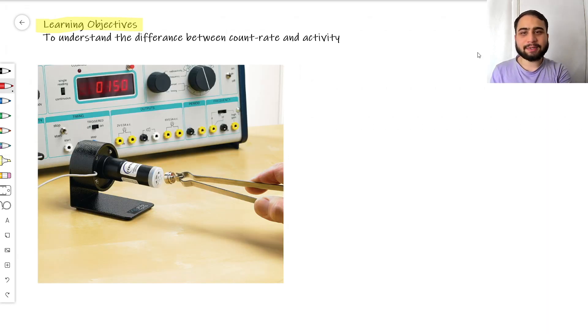I have here a really common setup in schools for investigating radiation with a couple new pieces of apparatus. This little cylinder right here is called a Geiger-Muller tube, and this big machine behind it is called a counter.